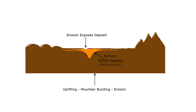In 1896, prospectors discovered the exposed Sullivan mineralization. It took many years and much work to realize the extent of this deposit, which ultimately became the main asset of a company called Cominco for much of the 20th century.